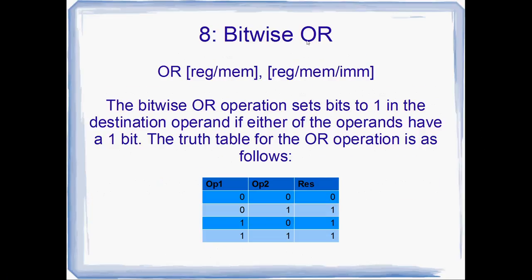Number 8: bitwise OR, sometimes called Boolean OR. This is used to perform the bitwise OR operation between two operands. The OR operation sets bits to 1 in the destination if either of the two operands have 1 in their corresponding bits. So it returns 0 only if both bits are 0; otherwise it returns 1. These Boolean operations are arguably the most powerful of all, since with the shifts and Boolean operations you can actually derive all the other operations — multiply, divide, add, anything at all. There's the truth table for OR.